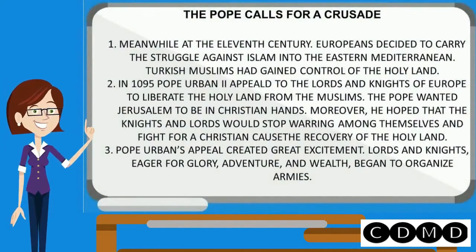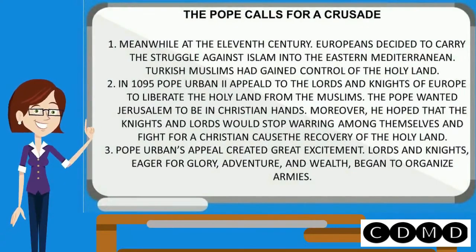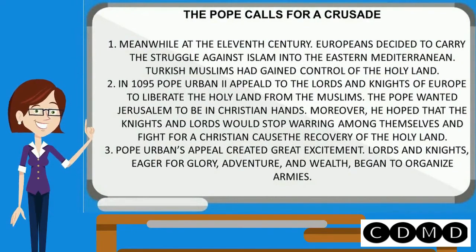The Pope calls for a crusade. At the end of the 11th century, Europeans decided to carry the struggle against Islam into the eastern Mediterranean. Turkish Muslims had gained control of the Holy Land. In 1095, Pope Urban II appealed to the lords and knights of Europe to liberate the Holy Land from the Muslims. The Pope wanted Jerusalem to be in Christian hands, and he hoped that the knights and lords would stop warring among themselves and fight for the recovery of the Holy Land. Pope Urban's appeal created great excitement, and lords and knights, eager for glory, adventure, and wealth, began to organize armies.